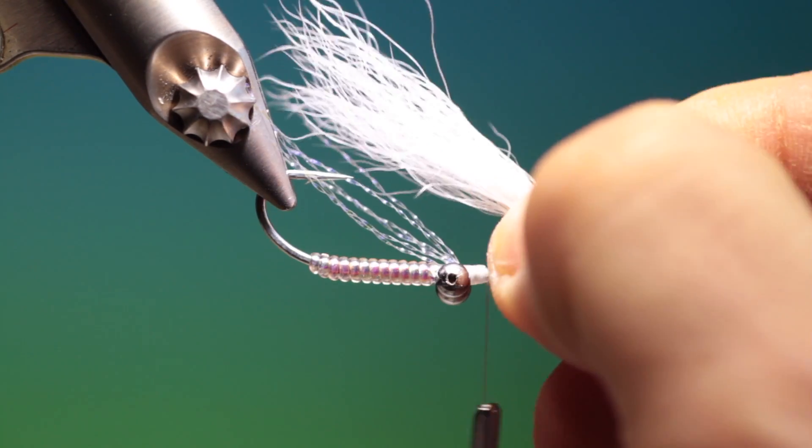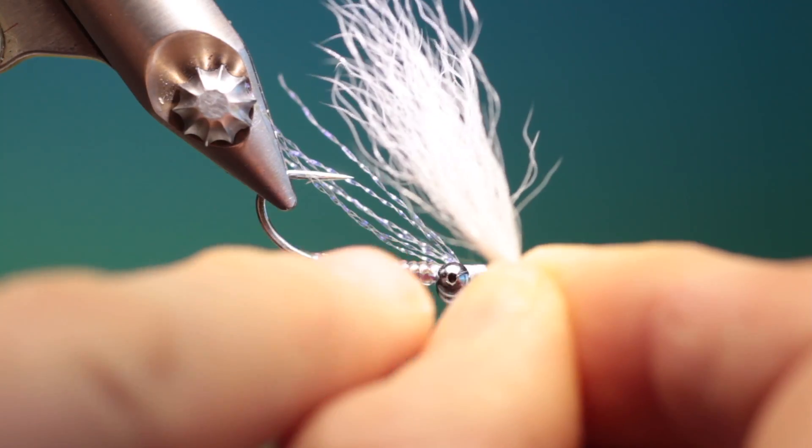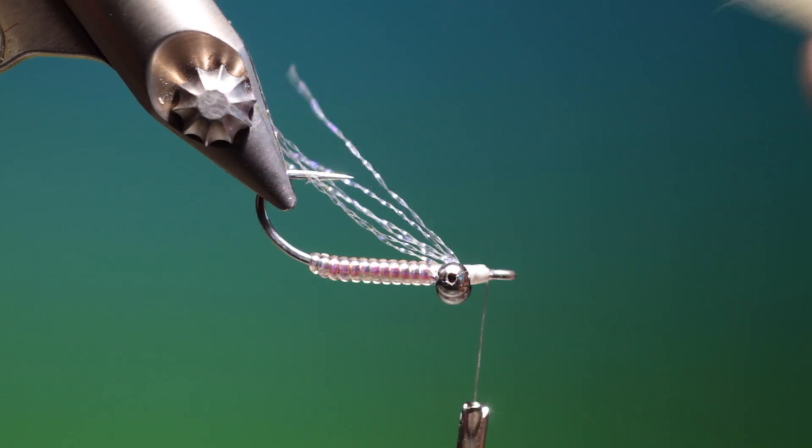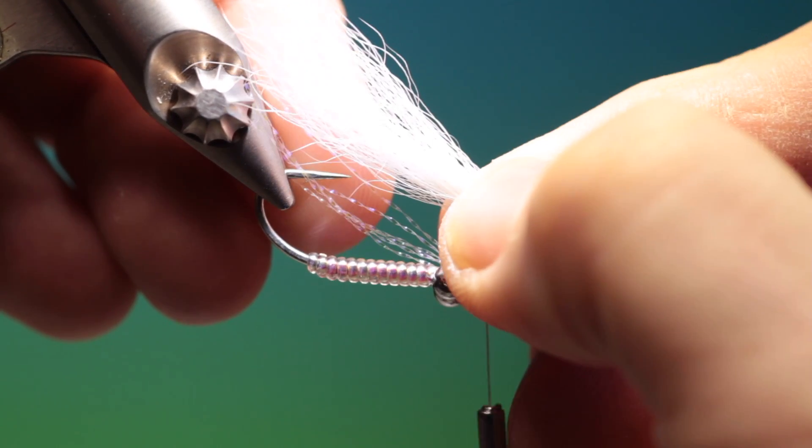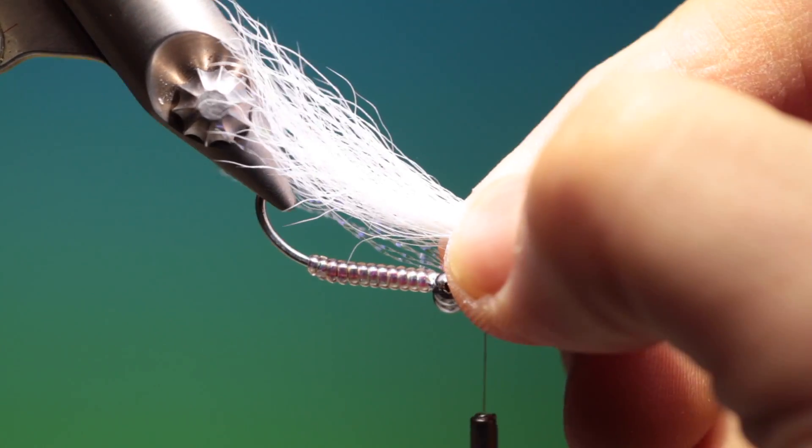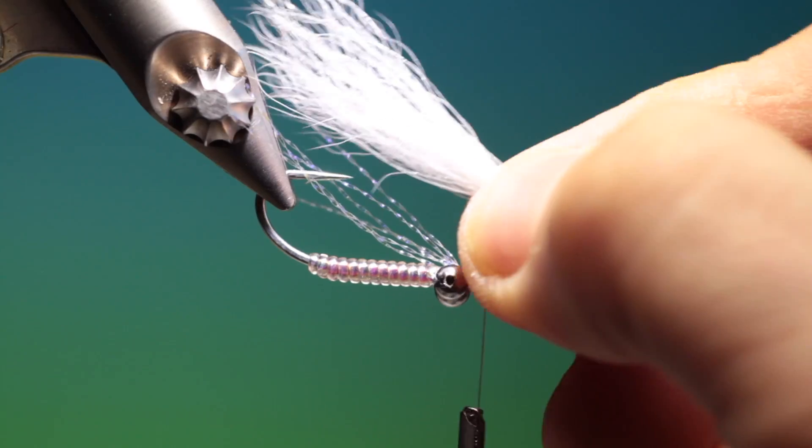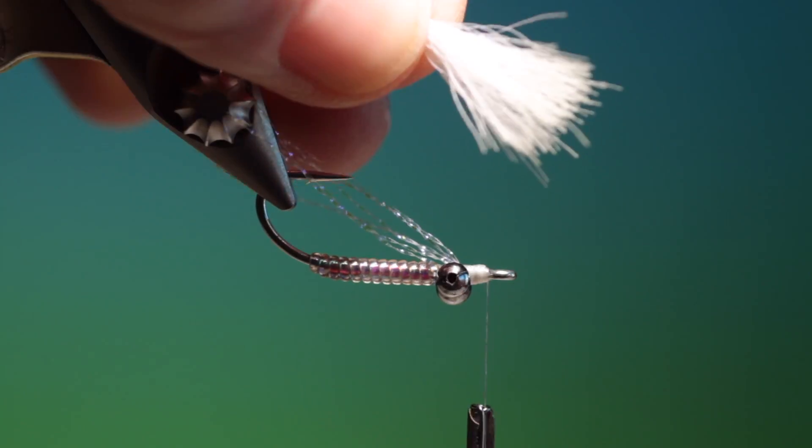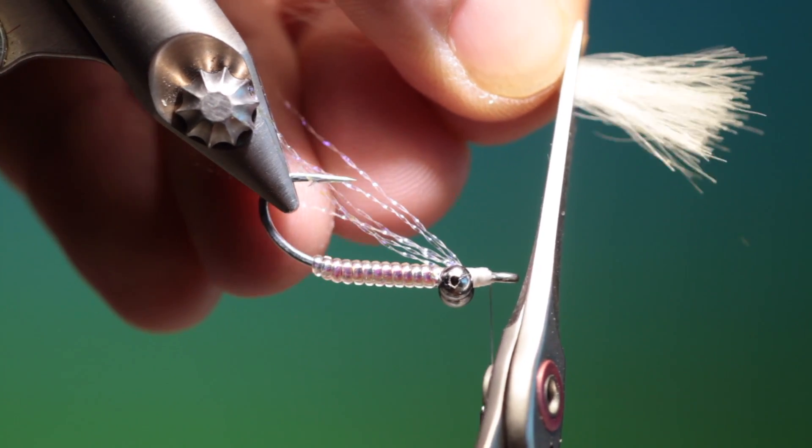Take a bunch of calf tail. You can stack this if you want but I like to leave it uneven so you get that kind of pear shape. This should be a little longer than the crystal flash, but still again cover the hook bend and point. So we just measure that and trim that off there.